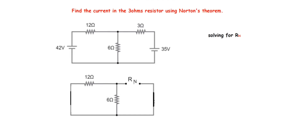After taking out the load resistor, you have to short circuit any voltage source. You can see that this is a voltage source here, so I'm going to short circuit it by joining the positive to the negative terminal. So this is what I have done — there is no voltage source in this circuit anymore. Also, since there is a current source, we open circuit it. After doing this, you can now calculate Norton's resistance rN.